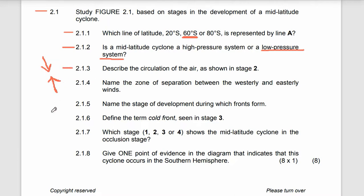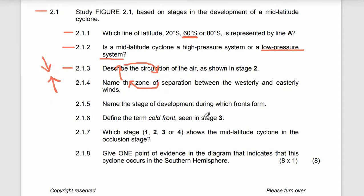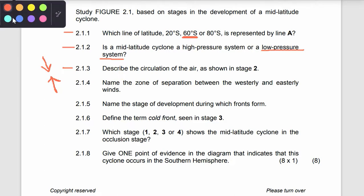Let's move to 2.1.3: describe the circulation of the air as shown in stage 2. Let's go to stage 2. As you can see, this is a clockwise air flow. In stage 2, the air masses start to rotate or move in a clockwise direction.